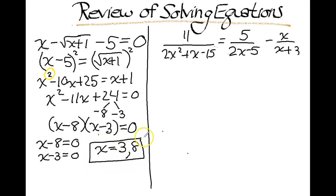Let's check 3. If I do 3 minus the square root of 3 plus 1 minus 5 equals 0. I know 3 plus 1 is 4, so the square root of 4 is 2. So I get 3 minus 2 minus 5 equals 0. That is not true. So I'm going to cross 3 off. That is not a solution.